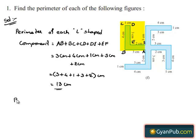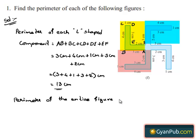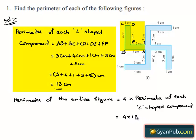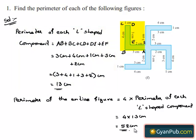Now let us find out the perimeter of the entire figure, which is nothing but 4 times the perimeter of each L-shaped component. This is equal to 4 times 13 cm. By multiplying we will get 52 cm. Therefore the perimeter of the entire figure is 52 cm.